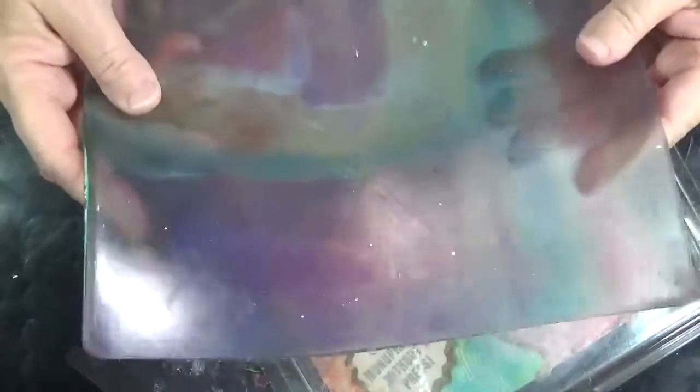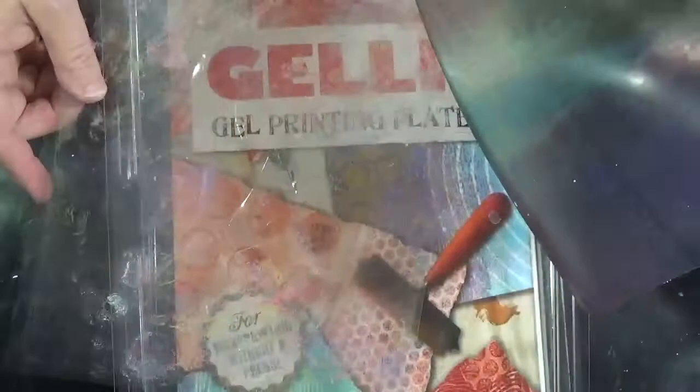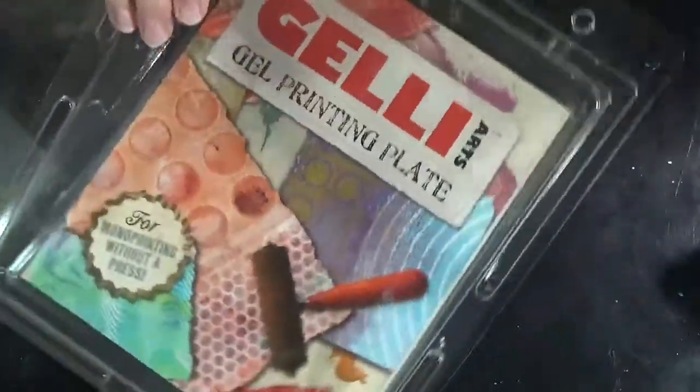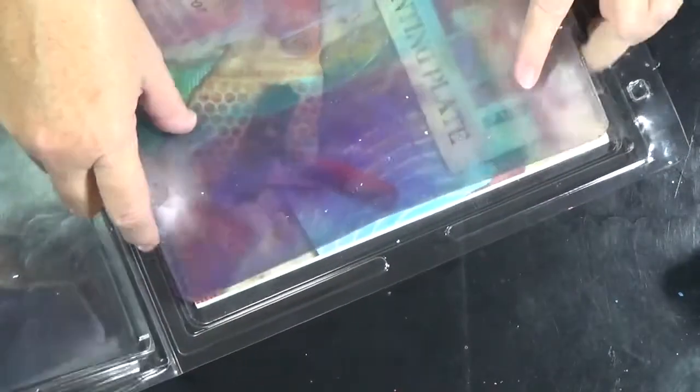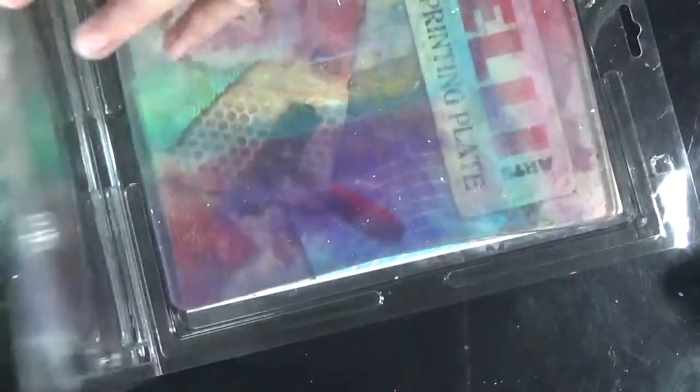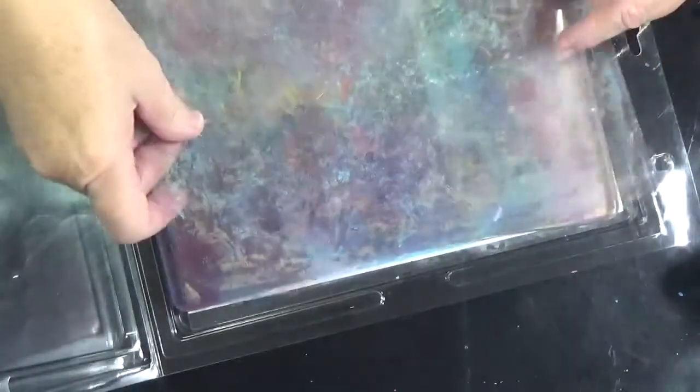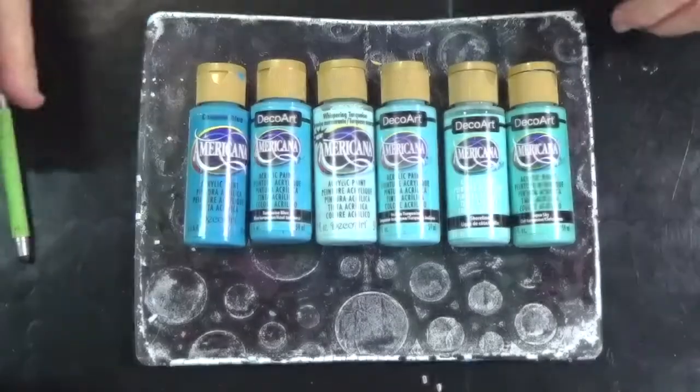My gel plate comes in this clamshell, with a piece of mylar on either side. It's a very soft, forgiving material. Be careful when you're gel printing on it that you don't use anything terribly sharp because you can damage it. When you store it, put your two pieces of mylar back on either side, put it back into your clamshell, and store it flat. At the end of the video I'm going to show you how to clean your gel plate too.